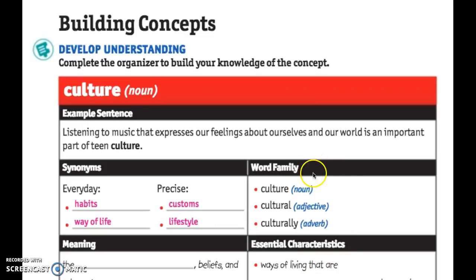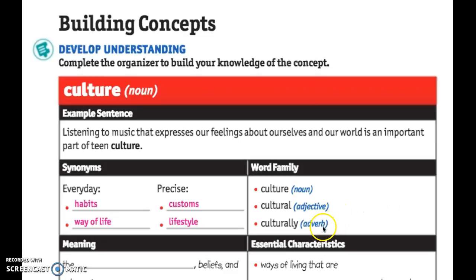Now take a look at the word family here. You can say culture, which is the noun. You can say cultural, which is an adjective. And you can say culturally, which is an adverb. So next to noun, write 'thing.' Next to adjective, write 'a description.' And then next to adverb, write 'how it's done,' because an adverb tells you how the verb is — like 'he decorated culturally' or 'he sang culturally.'